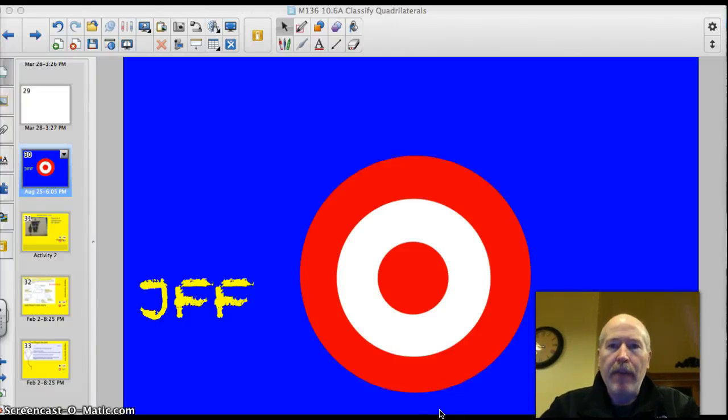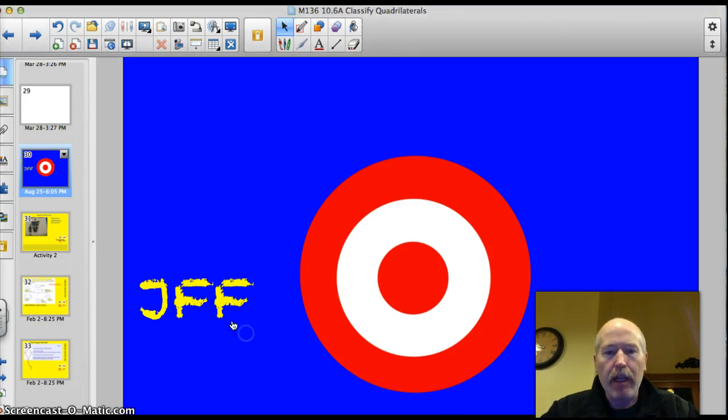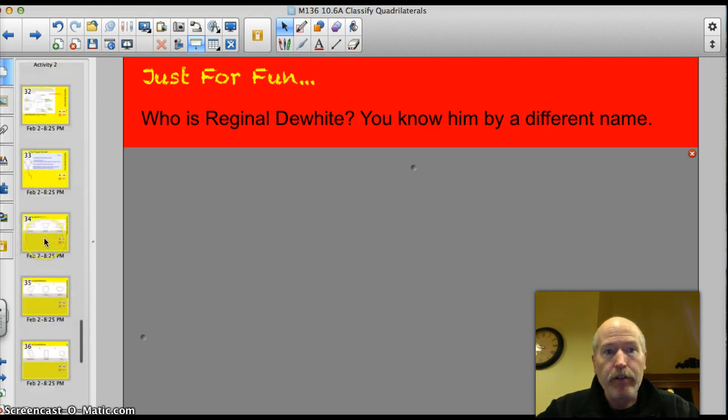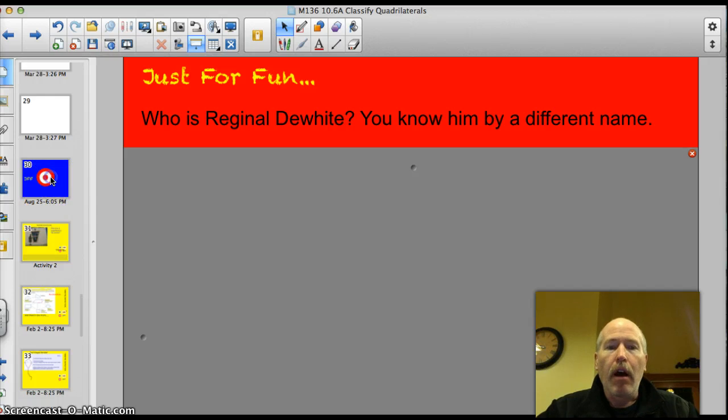Hey Valley, tonight we're going to have a review lesson on classifying quadrilaterals and identifying them. Before we do that, let's start with a rock and roll trivia question. Who is Reginald Dwight? I think you'll know him by a different name. This would be a good one to ask your parents tonight. Then you can say, yeah, I actually learned something from Mr. Dudley.